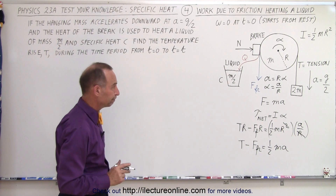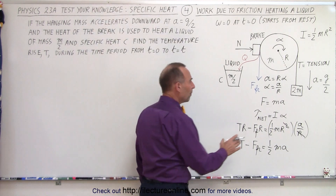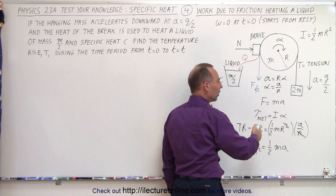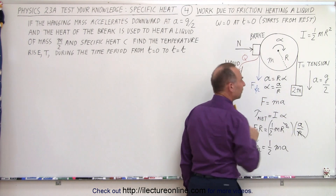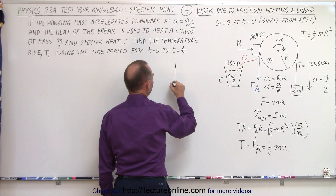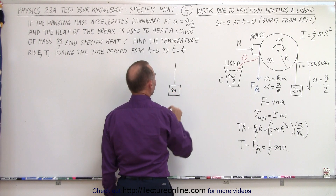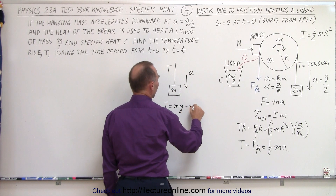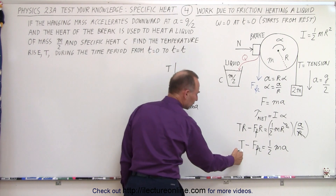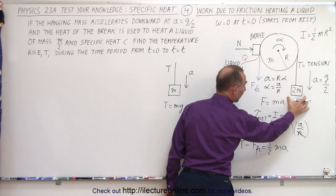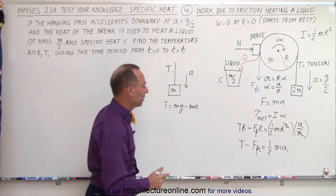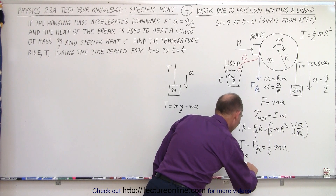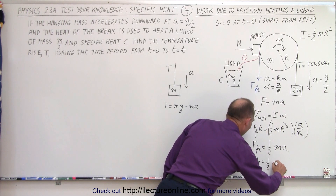Now, what about the tension in the string? Whenever we have an object hanging down of mass m accelerating downward with acceleration a, then the tension in the string is going to be equal to mg minus ma. We're going to use the same principle here. The tension is the mass, which is 2m, times g minus 2m times a. So we write this as 2m times g minus 2m times a, minus the friction force, equals one half m times a.